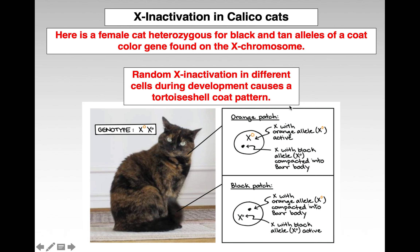The best example, or my favorite example, are calico cats, where X-inactivation causes the different pigmentation of the cat. Random X-inactivation in a very early embryo can cause either expression of one X chromosome, which causes the orange coloring, or the other X chromosome, which causes the black, depending on which X chromosome was inactivated.